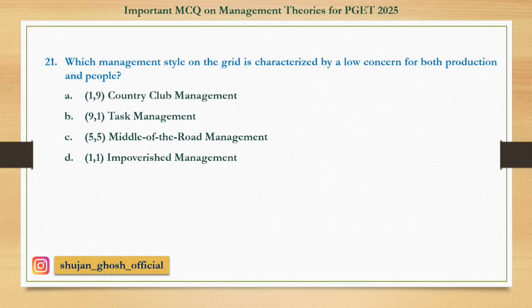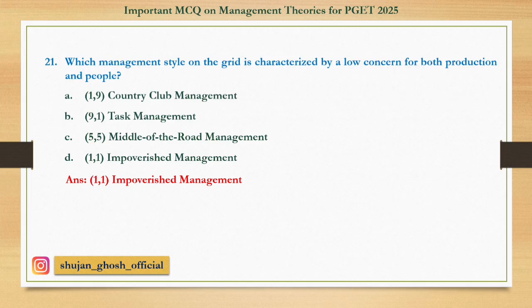Question number 21: Which management style on the grid is characterized by a low concern for both production and people? Option A: Country club management. B: Task management. C: Middle of the road management. D: Impoverished management. Answer is Impoverished management.